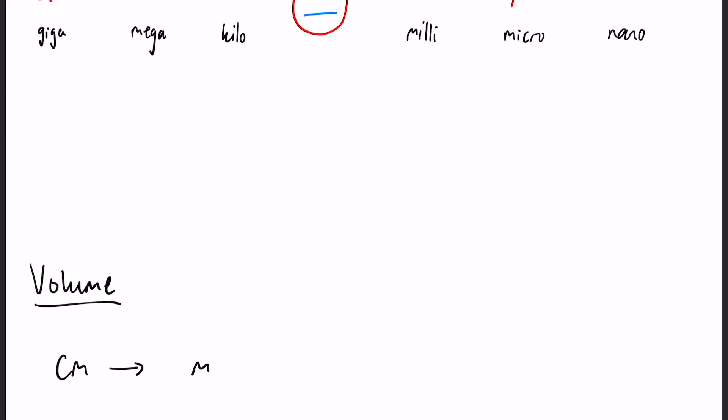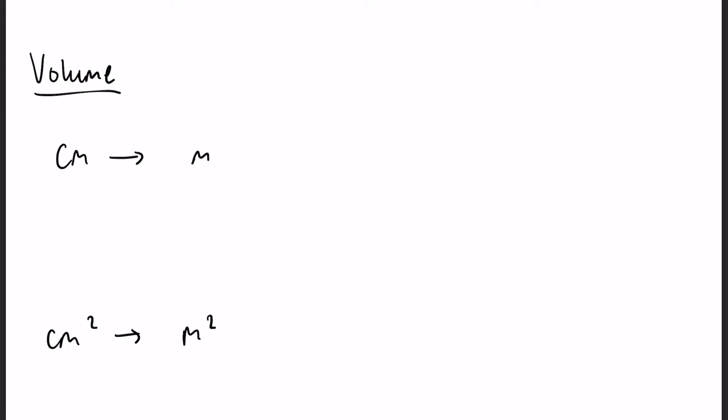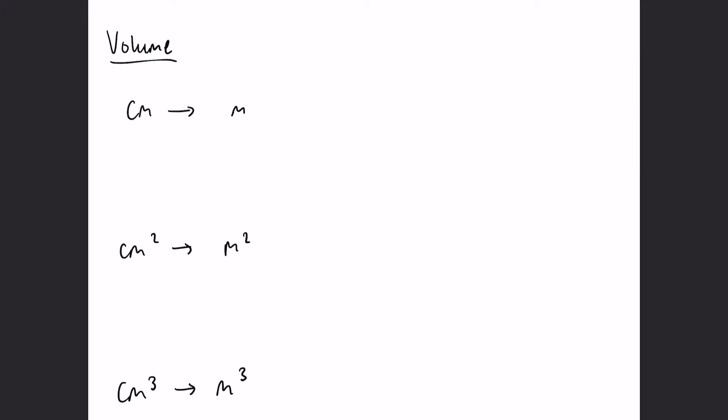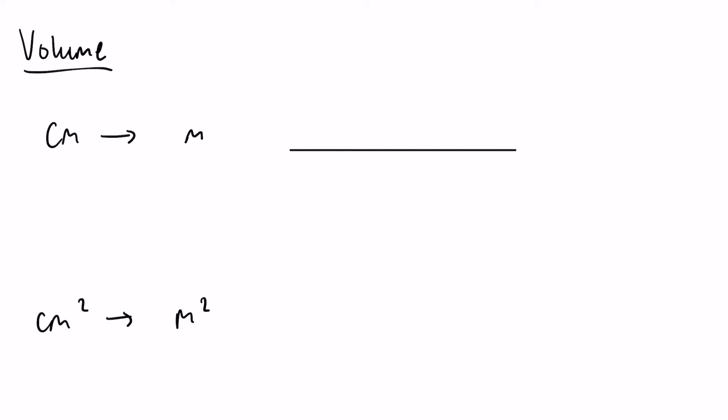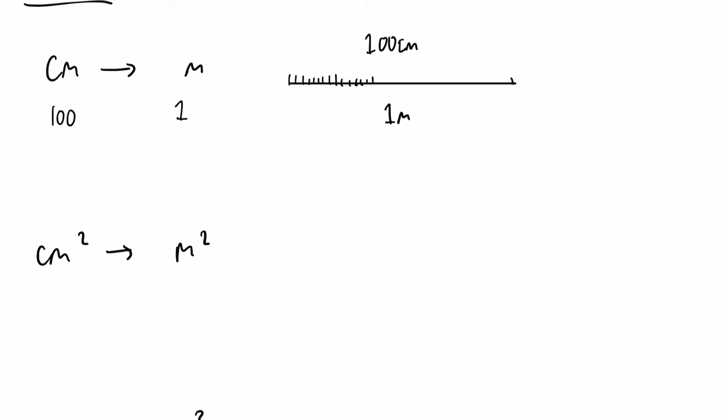Volume: when we're converting volumes it can often be quite tricky. First, centimeters to meters is straightforward. Imagine a one meter line split up into a hundred centimeters—100 centimeters equals one meter. Now it gets more challenging when we introduce squares because a lot of people think it's the same thing. They'll think 100 centimeters squared is just one meter squared. No.